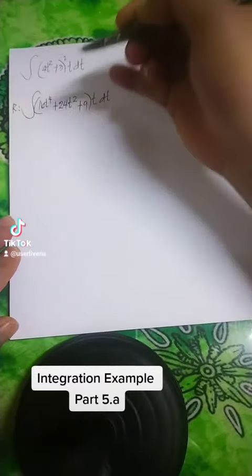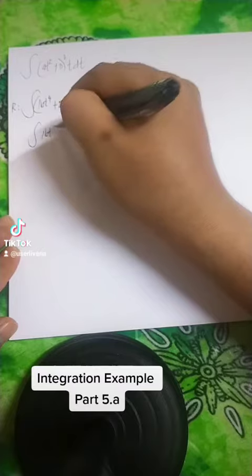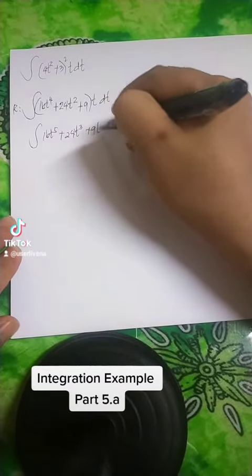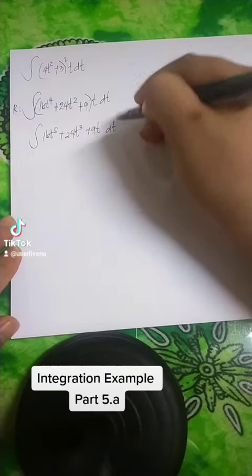Then, again, we simplify that is the integral of 16t to the 5th plus 24t cubed plus 9t dt.